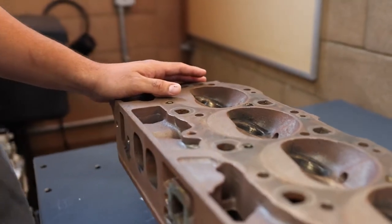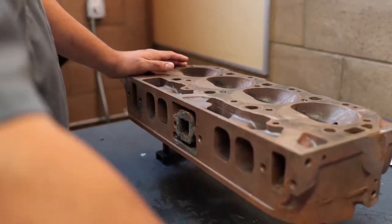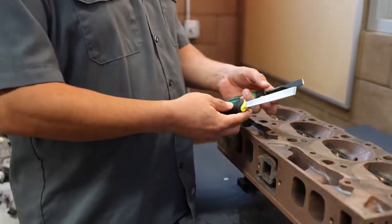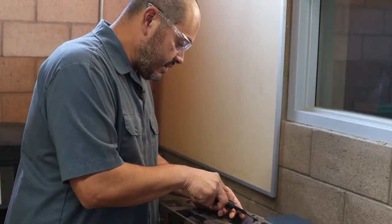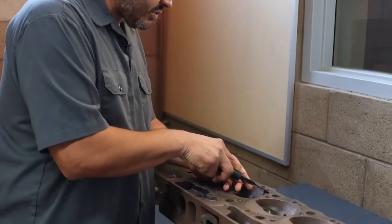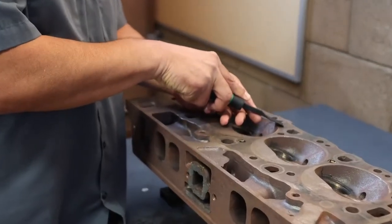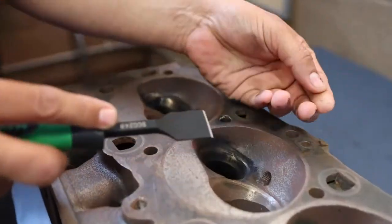Before we start measuring these cylinder heads for flatness, we can use a gasket scraper. There's a couple styles. I prefer this style here. It's got a hardened blade and you got to make sure it's nice and sharp. And then you just get in there and scrape that gasket material off. And there it is there. That'll interfere with your measurement.